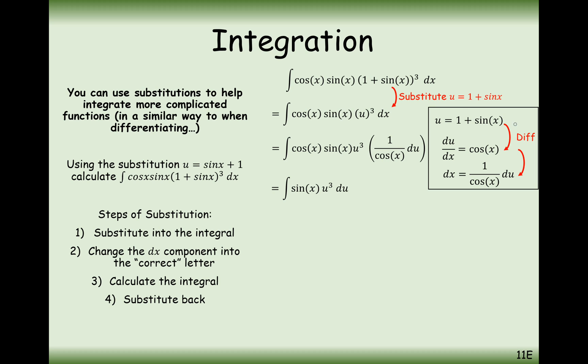What we can do then is use our substitution again, rearrange it a little bit to work out what sin x is equal to in terms of u, and then substitute that in. Take u equals 1 plus sin x, take away 1 from both sides, and replace sin with u minus 1. So that's going to be replaced with u minus 1.